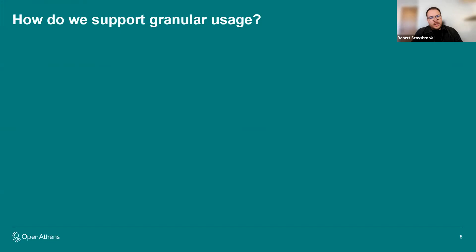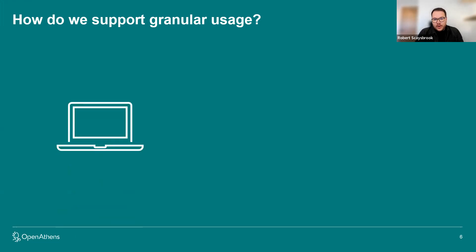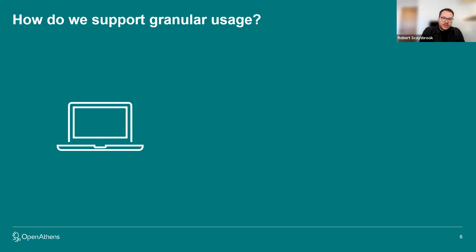So how do we support the granular usage attributes? Authentication technology is used by libraries to easily secure information and also to release the attribute. The first step for OpenAthens is to connect OpenAthens with your existing institutional identity management — that could be something like Azure, Okta, Ping Identity, or whatever service your institution uses for in-house authentication. That's step one.